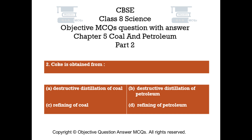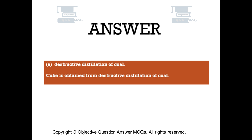Question number 2: Coke is obtained from — Option A: Destructive distillation of coal. Option B: Destructive distillation of petroleum. Option C: Refining of coal. Option D: Refining of petroleum. The right answer is Option A: Destructive distillation of coal.